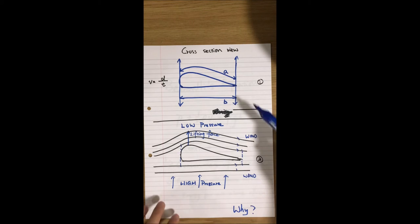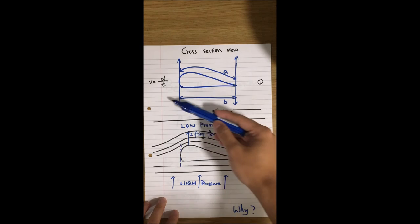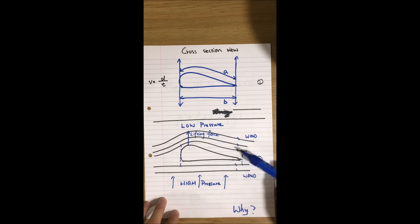This implies that the speed or velocity of the air in A will be faster than B, as speed equals distance over time. Therefore, the pressure at top will be lower than at bottom. Thus, an upward force will be produced on the blade as lifting force, as pressure is force over a contact area.